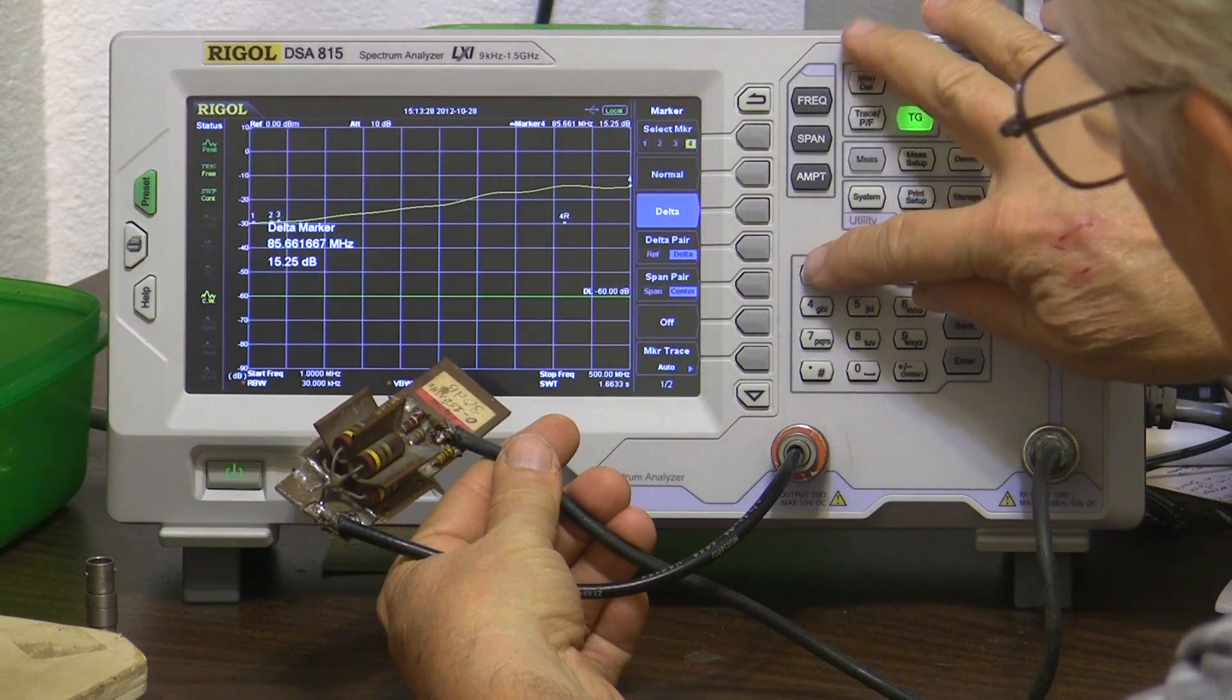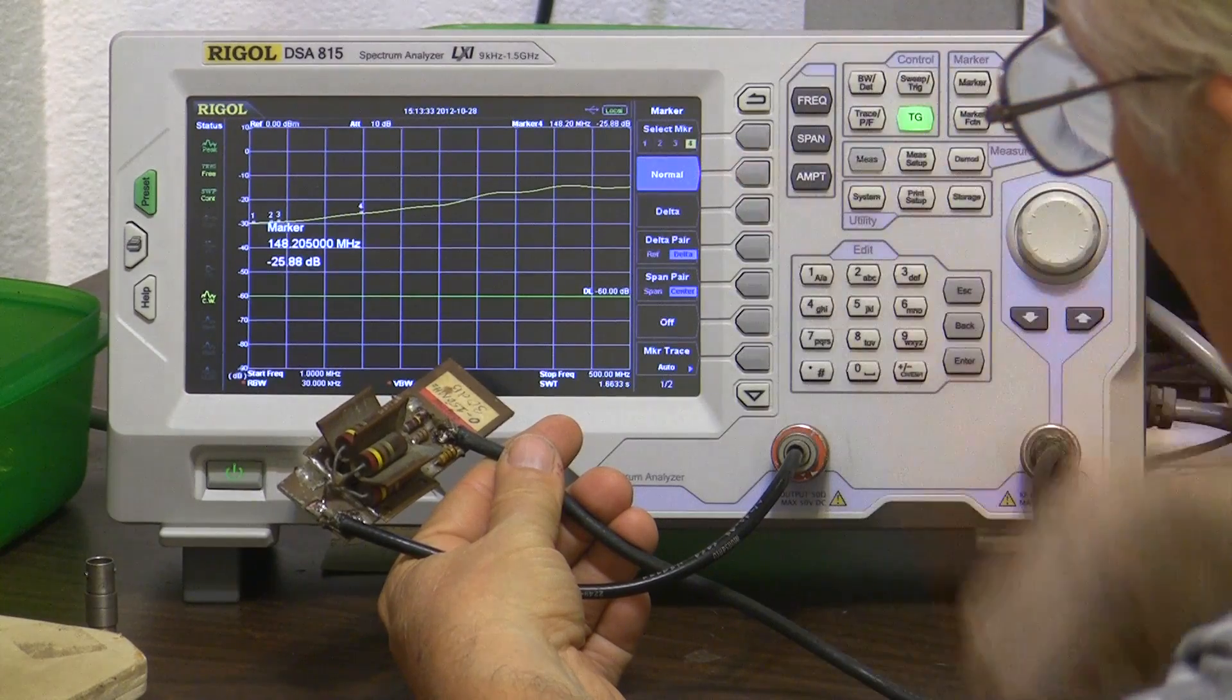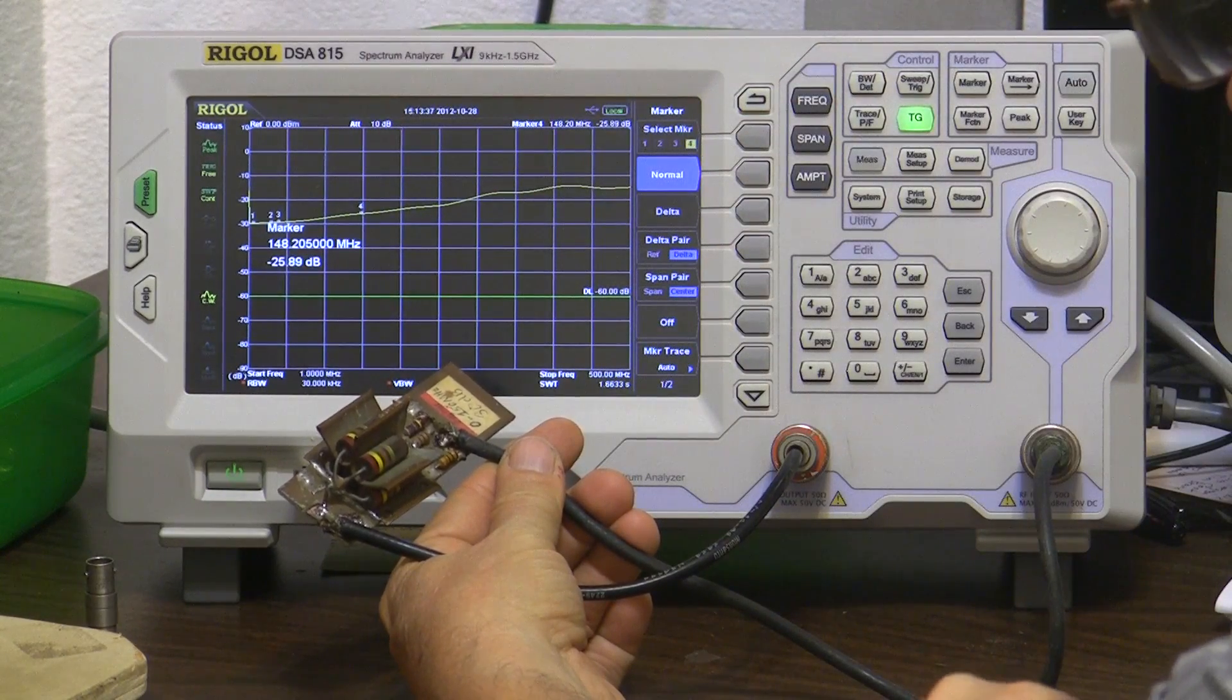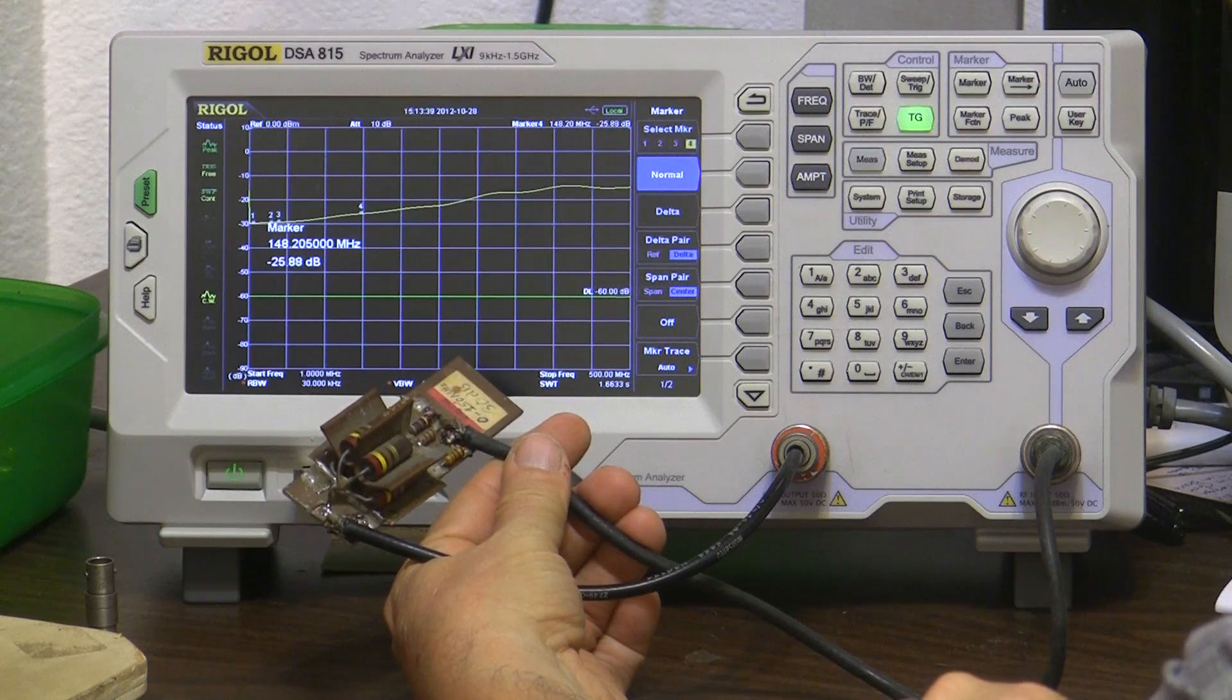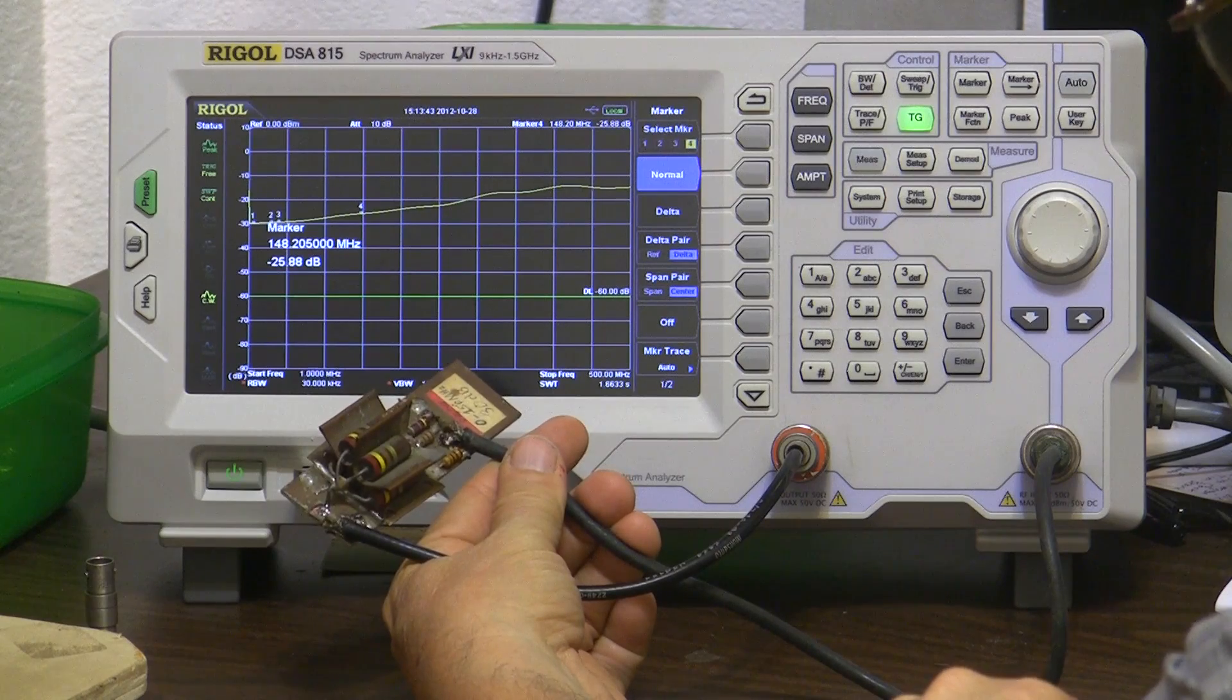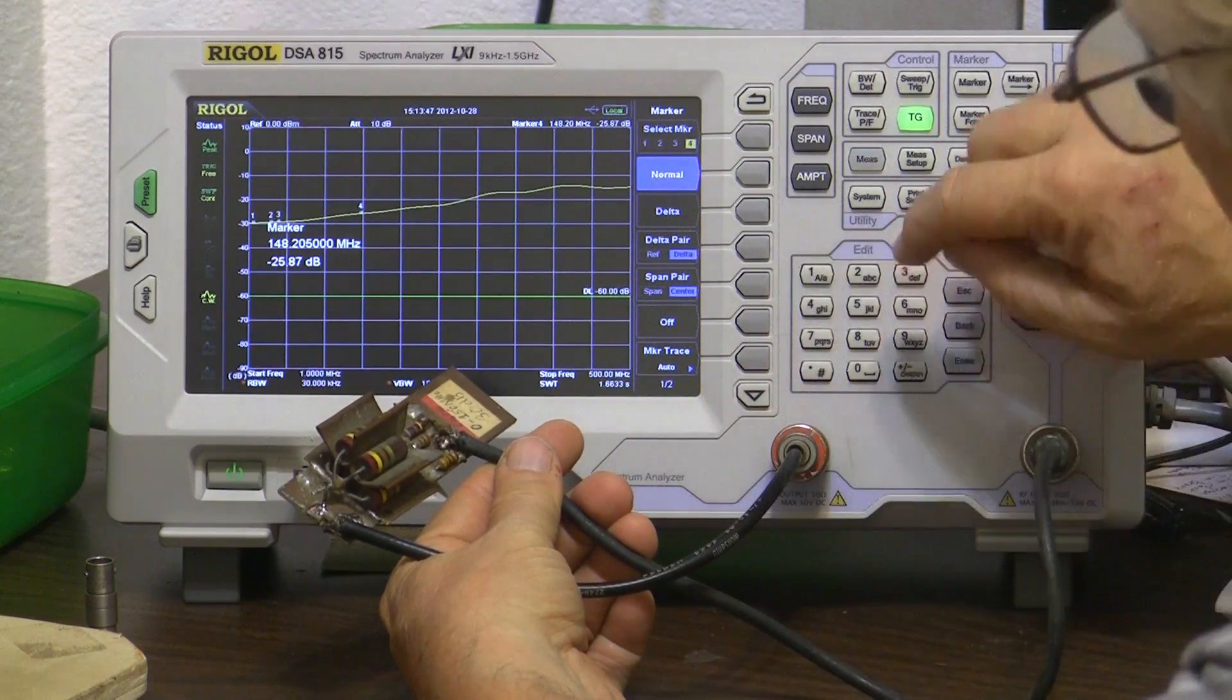And marker 4, let's put it at 148, the top of the 2 meter amateur band. 148 megahertz. So at 148 I have about 26 dB of attenuation and probably not a very good match. So this doesn't look like I'd want to use it on 2 meters.